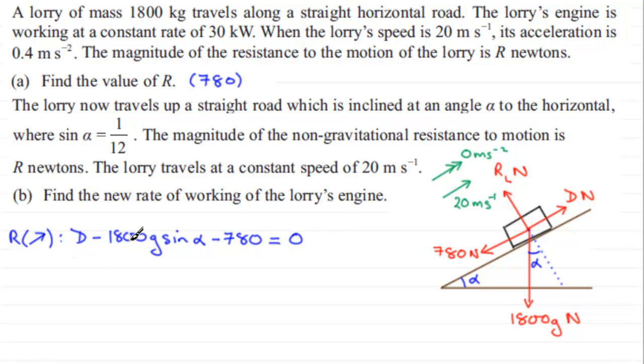So if we rearrange this for D by adding both terms here to both sides, we therefore have D equals 1800 times g, g being 9.8, sine of alpha is 1/12. And then we've got plus the 780. If you work that out, you'll find that that value of D turns out to be 2250.